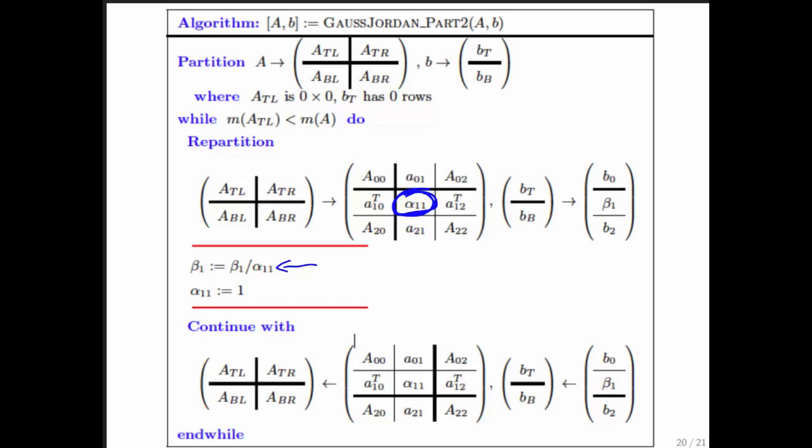You want to divide the current row by the diagonal entry, and that's happening right here. In practice, all you need to do is divide the current entry on the right by the current diagonal entry, then set the current diagonal entry to 1, because the other parts of the matrix had already been overwritten by 0s and therefore you don't need to compute with those.